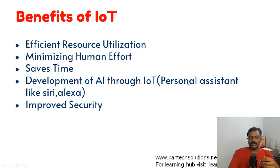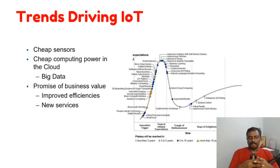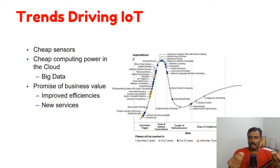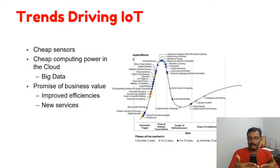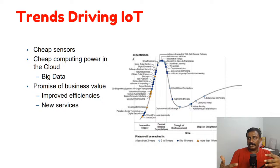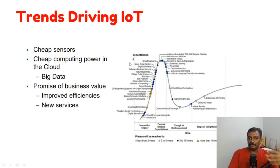Trends driving IoT include cheap sensors available in the market — temperature sensors for about 50 rupees, one to two dollars — and cheap computing power like microcontrollers for 40 rupees, about one dollar, or DSP processors for three to four dollars. A lot of new algorithms for big data and cheap cloud availability are also driving IoT. These trends increase profits, increase human efficiency, and enable new services.